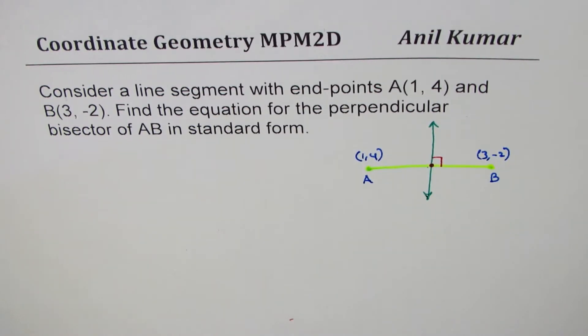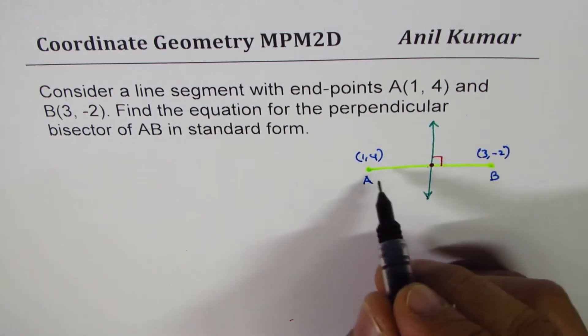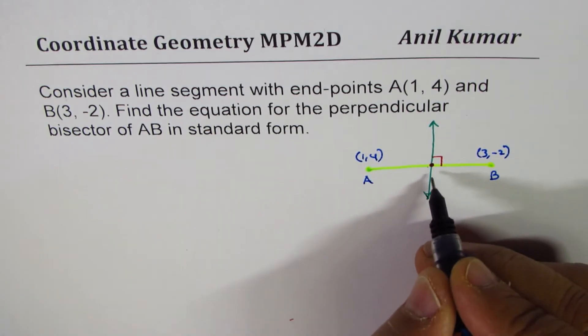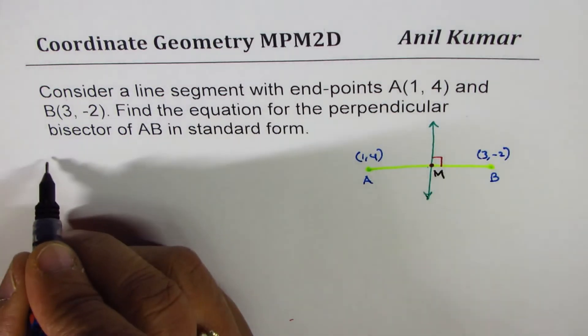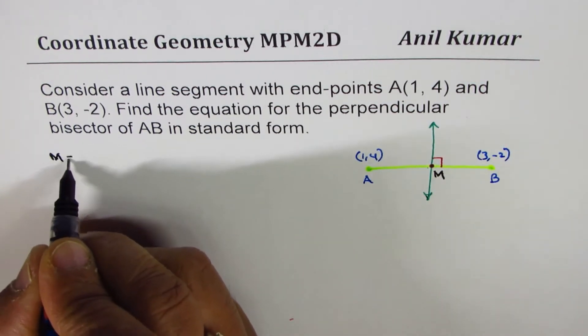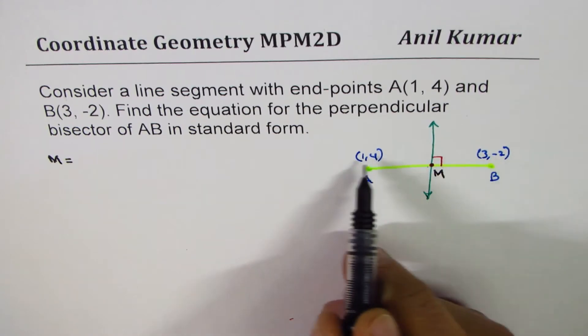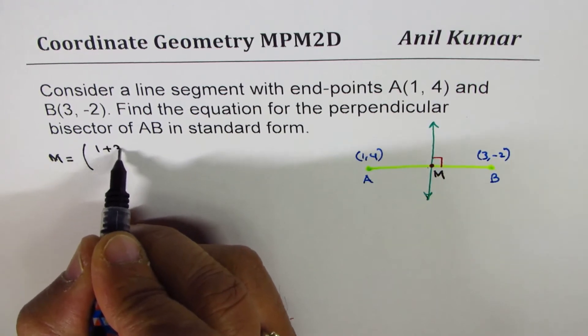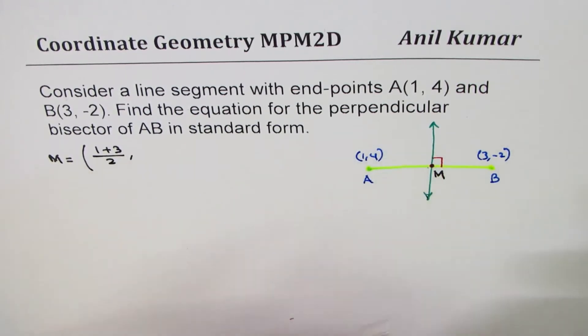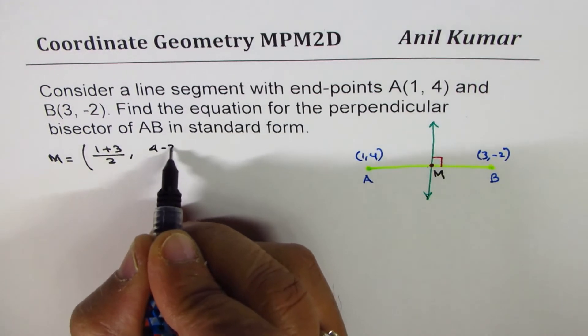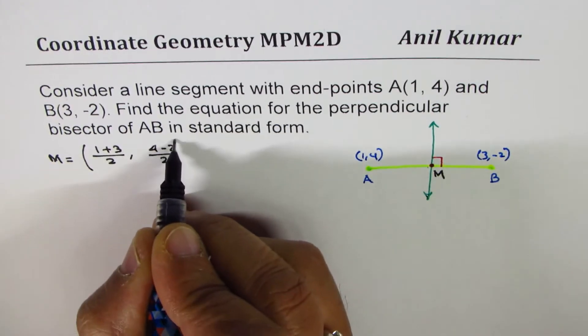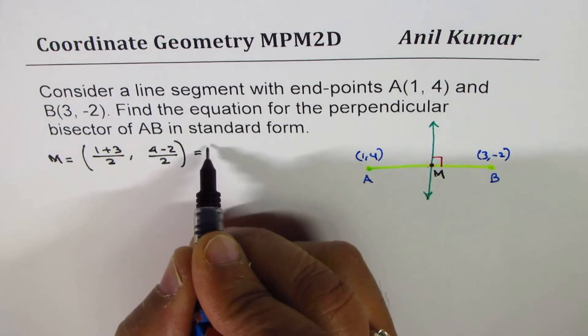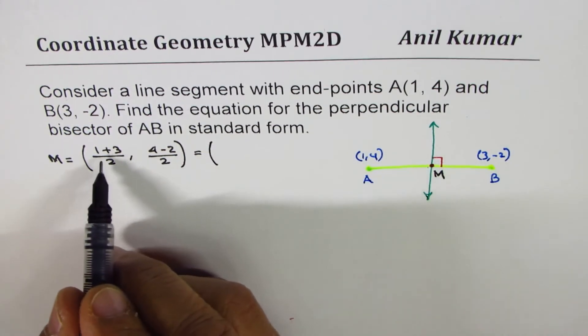So, I hope you have understood what is really required and now let's begin solving the question. First step should be either find slope of AB or the midpoint. Let's begin with the midpoint M. The midpoint M is equal to sum of these two x values divided by 2. So, we could write coordinates as (1+3)/2 and y coordinates will be (4-2)/2. Just add them, divide by 2 and that gives you the coordinate points as,